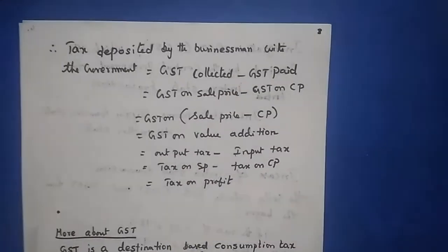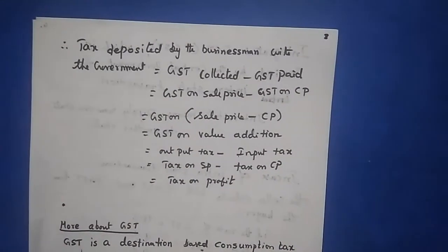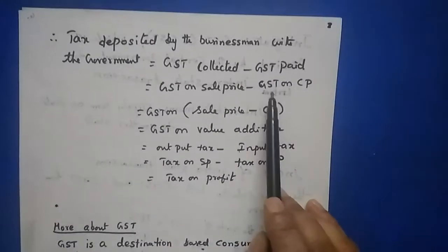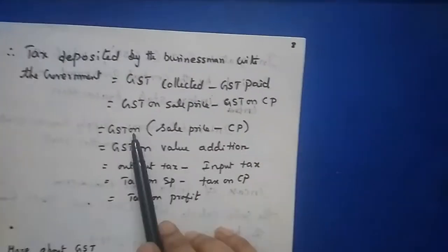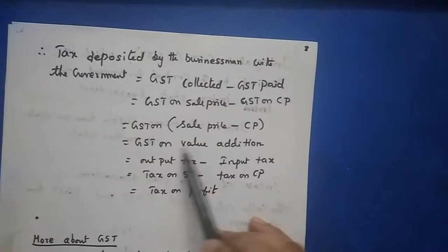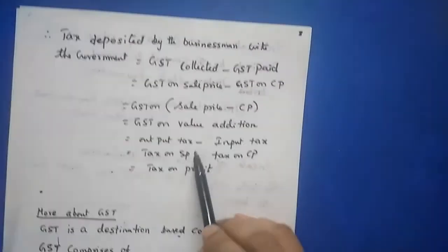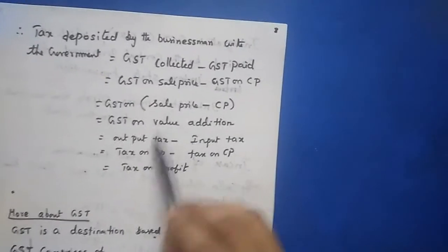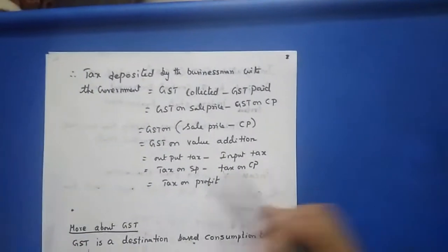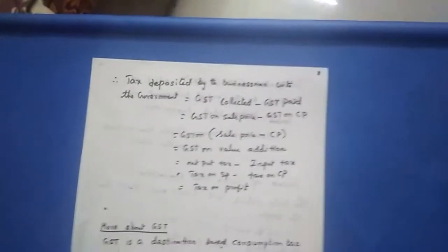The tax deposited by the businessman with the government equals GST collected minus GST paid, or GST on sale price minus GST on cost price. This can also be written as GST on (selling price minus cost price), i.e., GST on the value addition. Tax on the selling price is called output tax, and tax on cost price is called input tax. So the amount paid to the government equals output tax minus input tax.